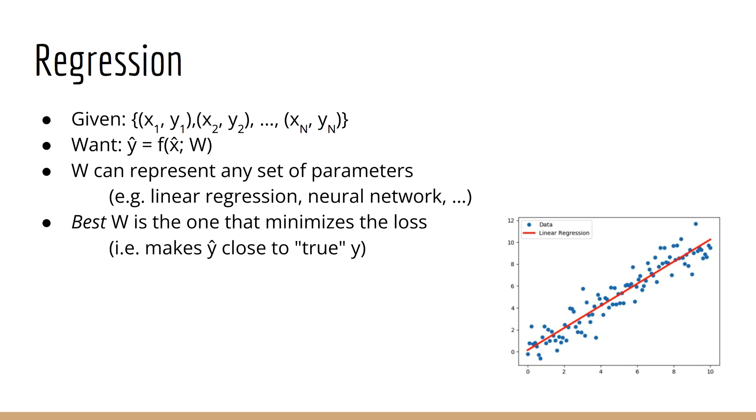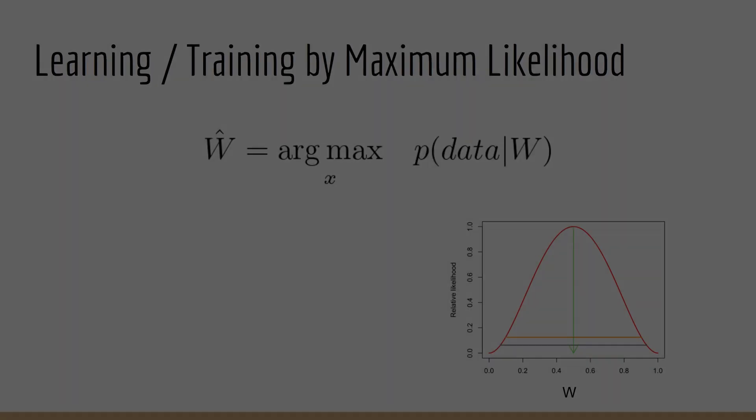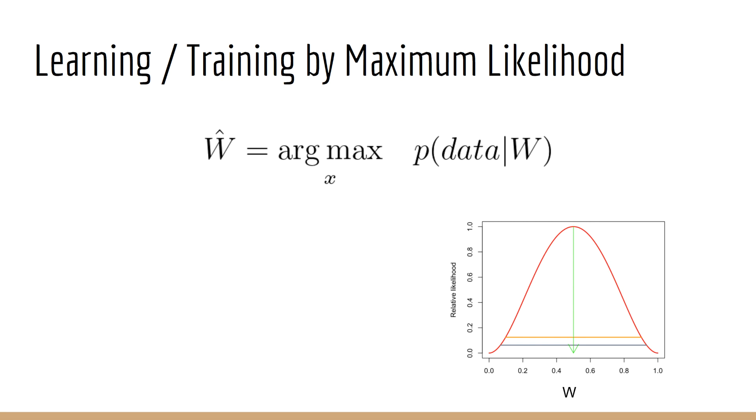In addition, let me emphasize that the function we learned is deterministic. Given an input x, it always returns the same output y hat. Generally speaking, we can train a machine learning model by using maximum likelihood estimation. That is, we create a function which is actually the probability distribution of the data given the set of parameters W.